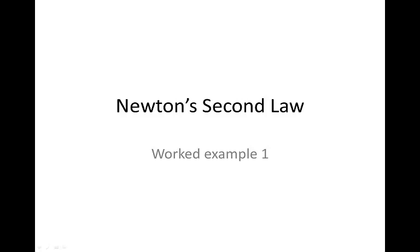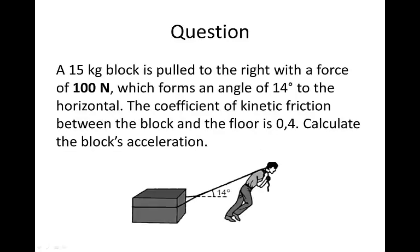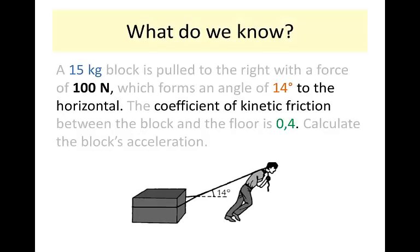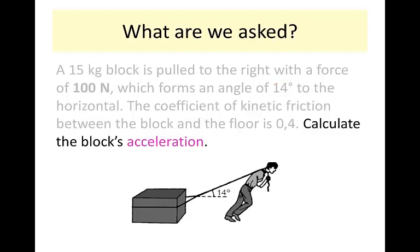In this lesson we work through a problem in which we apply Newton's second law. We have a 15 kilogram block being pulled to the right with a force of 100 Newtons, but not directly horizontally — rather at an angle of 14 degrees to the horizontal. The surface is not frictionless; the coefficient of kinetic friction is 0.4. We are asked to find the block's acceleration.